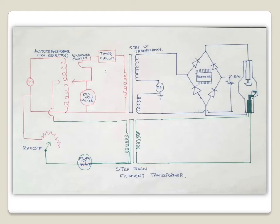The third circuit is the filament circuit. In the filament circuit you will find a rheostat and a step-down transformer, known as the filament transformer. The function of the filament transformer is to supply power to the cathode filament so as to produce heating of the cathode filament and thereby facilitate thermionic emission for producing electrons.